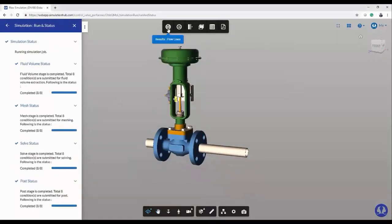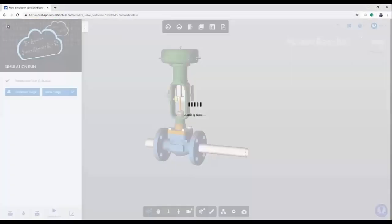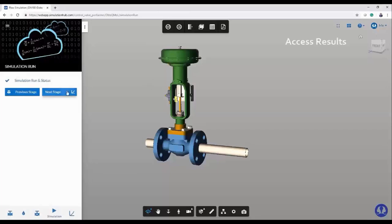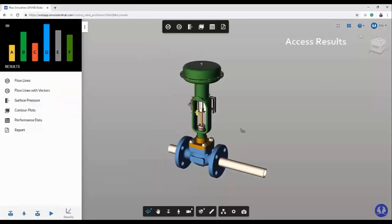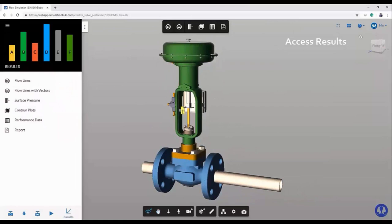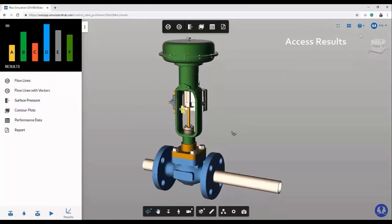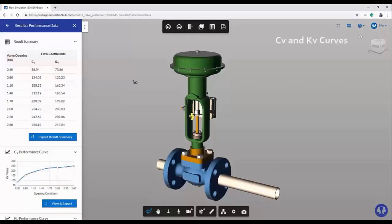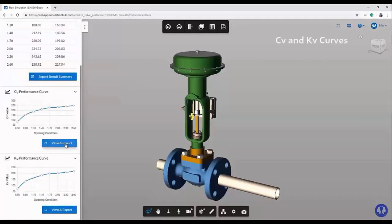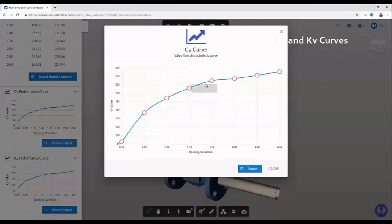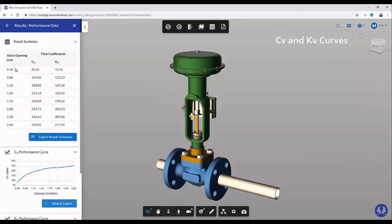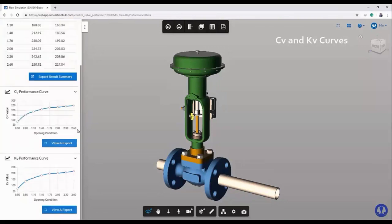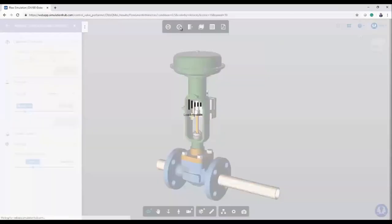Once the results are available, we will have the results tab activated. I am demonstrating the results of performance curves. This is the Cv curve. You can export the curve in any format you want, Excel or image. Similarly, now we are going towards some qualitative results. Here we are seeing the flow lines.